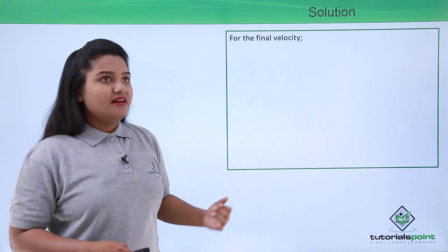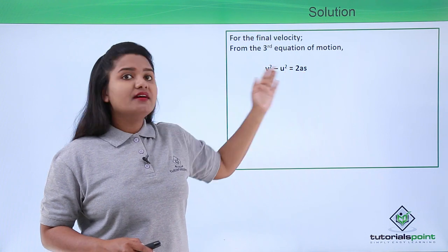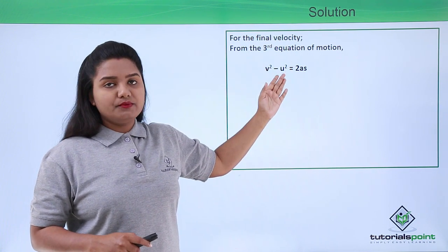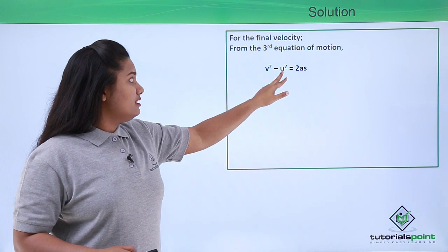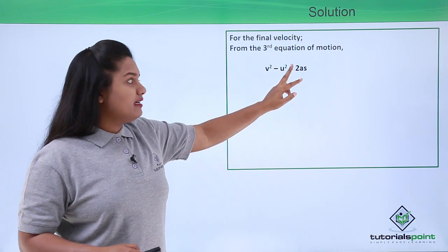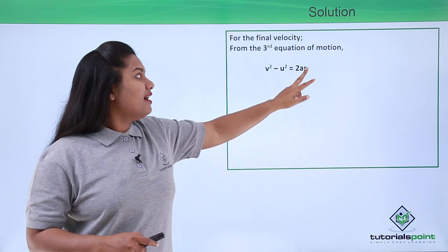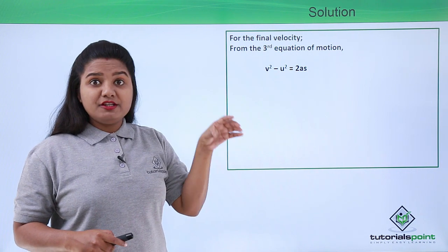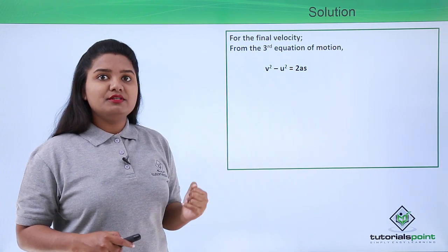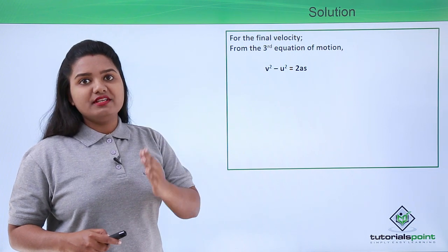For that, we'll use the third equation of motion, which is v² - u² = 2as. Here, the initial velocity u is 0, the acceleration a is 10 meters per second squared, and the displacement s (height of fall) is 0.8 meters.